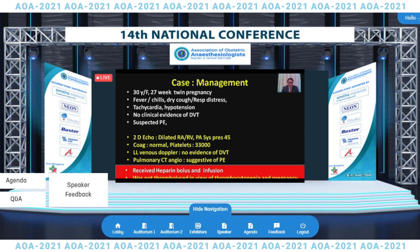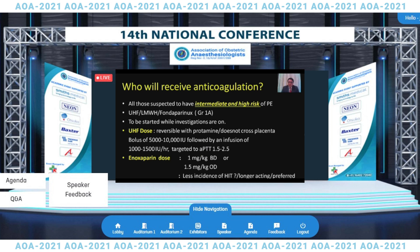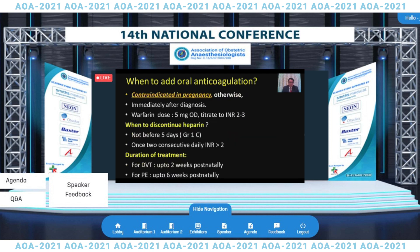The case continues: the patient received heparin bolus and infusion and was not thrombolyzed in view of thrombocytopenia and pregnancy. Most patients with a suspicion or evidence of DVT or pulmonary embolism will receive anticoagulation, often in the form of unfractionated heparin or low molecular weight heparin. Unfractionated heparin is started immediately: 5,000 to 10,000 units as a bolus followed by 1,000 or 1,500 units per hour, targeting an APTT of 1.5 to 2.5. Alternatively, enoxaparin can be given at 1 mg/kg/day or 1.5 mg/kg/day. Enoxaparin is preferred because it has less incidence of heparin-induced thrombocytopenia and is longer acting. The exception is renal insufficiency, where unfractionated heparin is preferred.